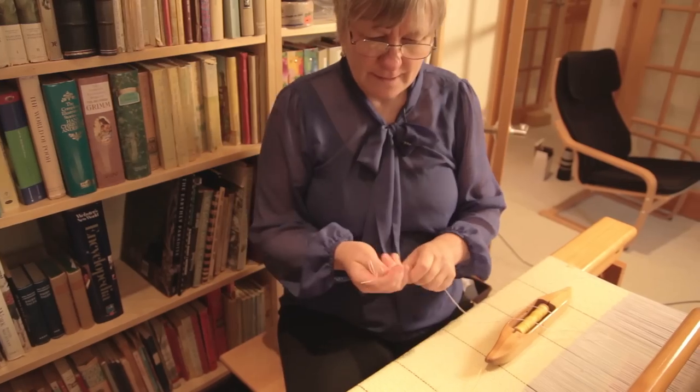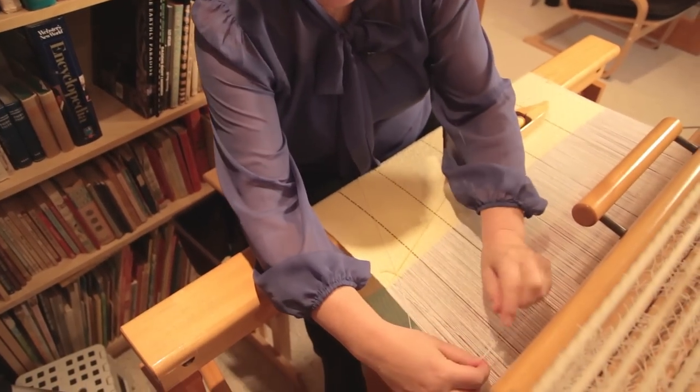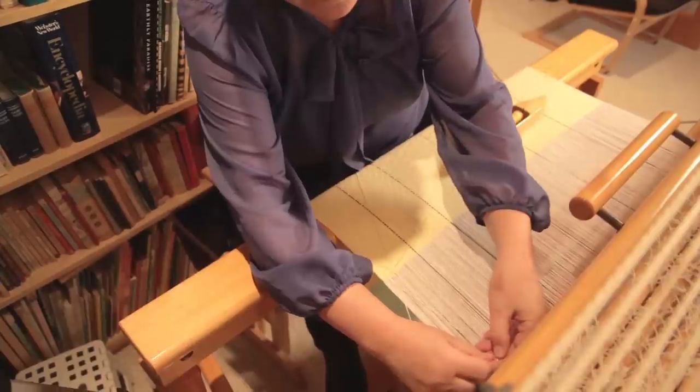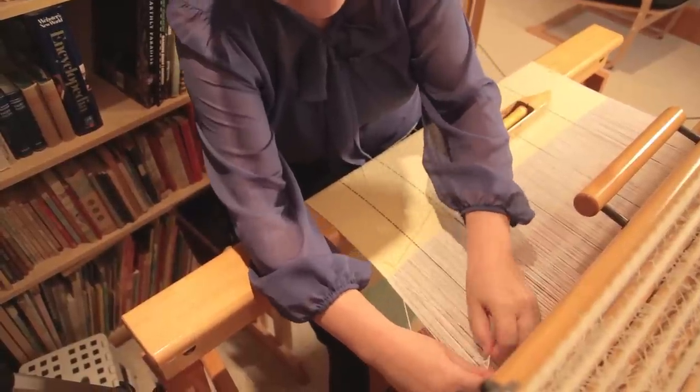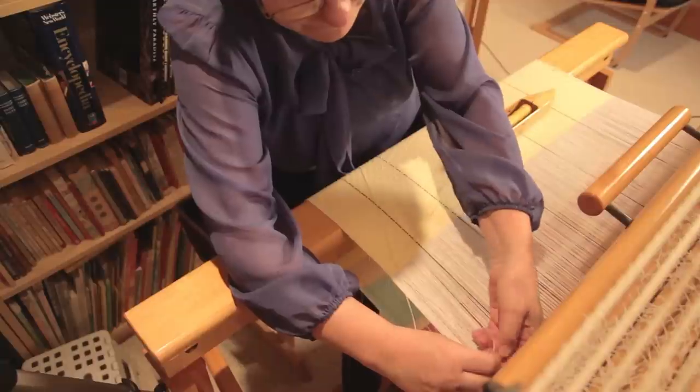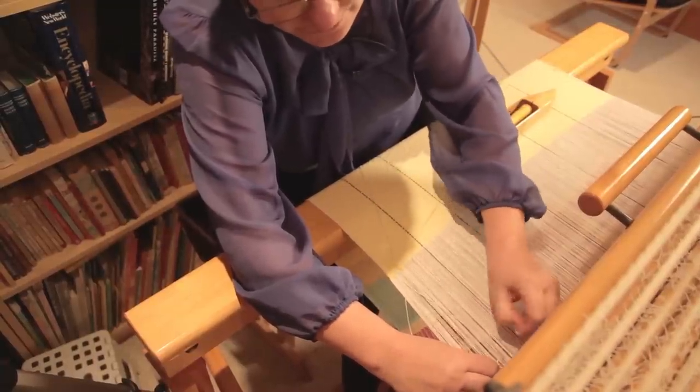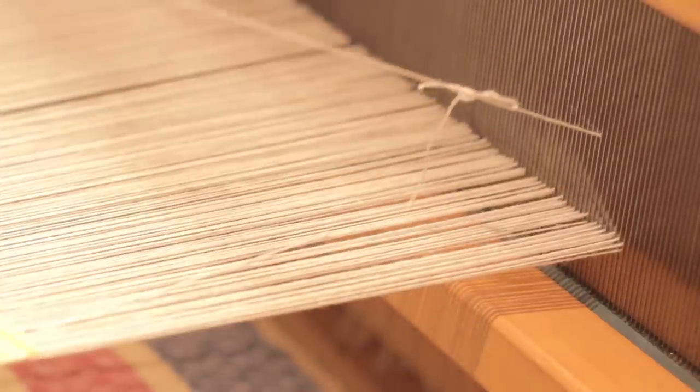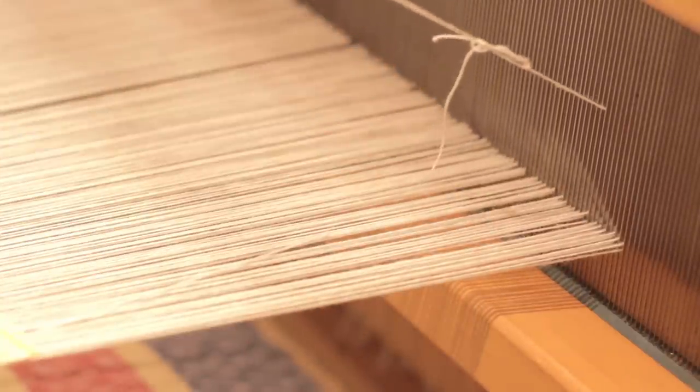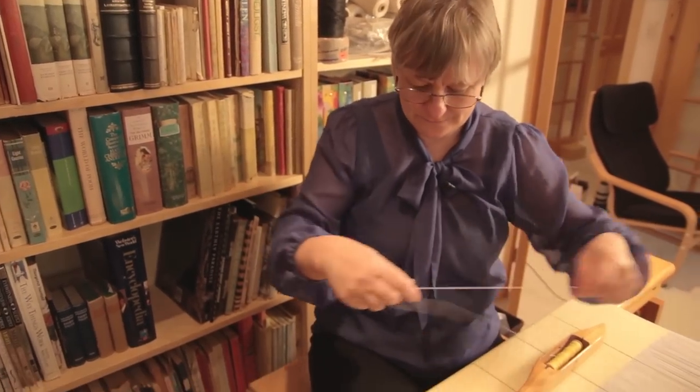Snip. And now I'm going to cheat. What I'm going to do is tie these two together in a little overhand knot. It doesn't have to hold well; it's going to be pulled out later. All it has to do is help me pull this thread through the reed and through the heddle to the back of my loom.